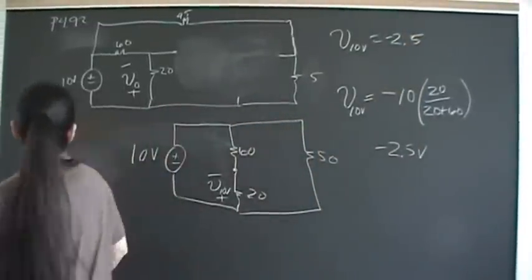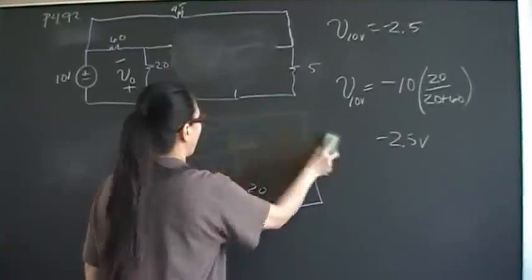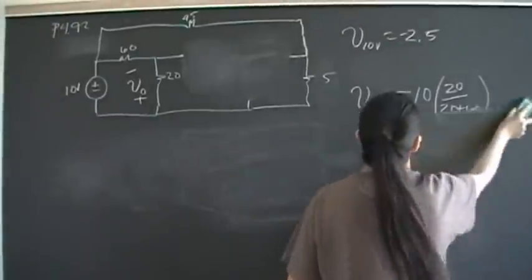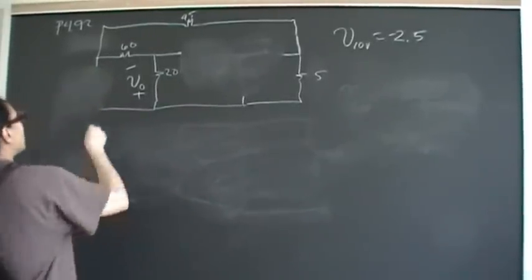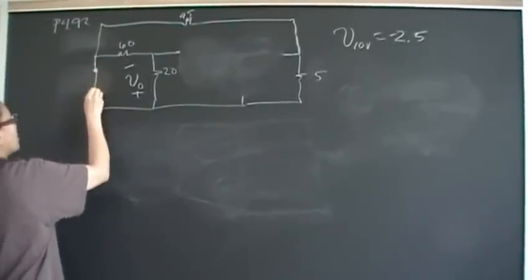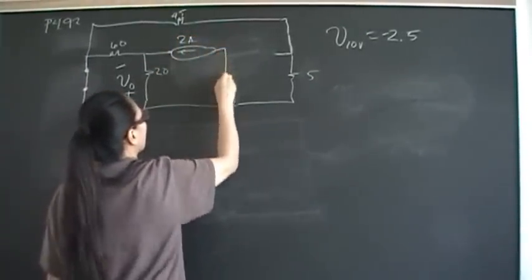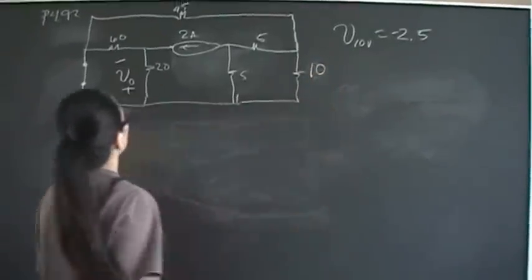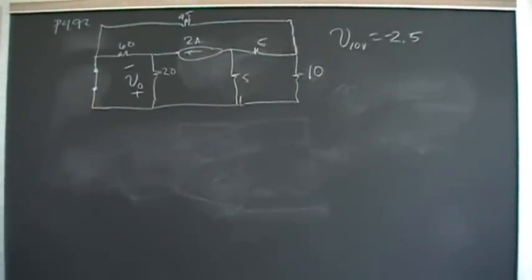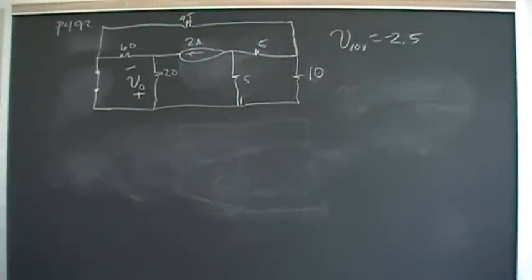So V of 10 volts is negative 2.5 volts. Now we're going to restore the circuit and short out the 10-volt independent voltage source, and consider only the 2-amp source. We restore the 2-amp source, and we have the 5-ohm, 5-ohm, and 10-ohm resistors. Now we have just a network of resistors, and we could find equivalent resistances and use current division.